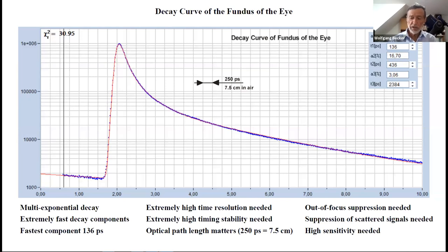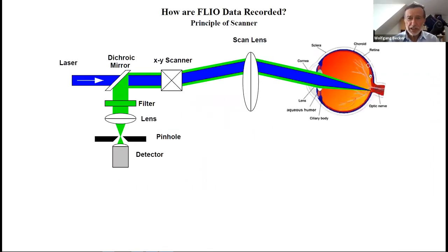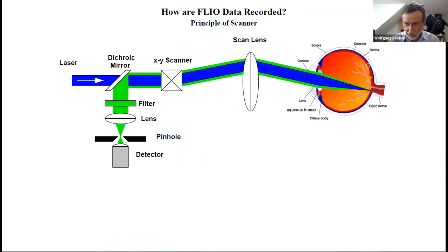Everything must be done at very low light intensities. That concludes the first part about decay functions. Are there any questions about these basic things? Let's move to the next part: how are FLIO data recorded?